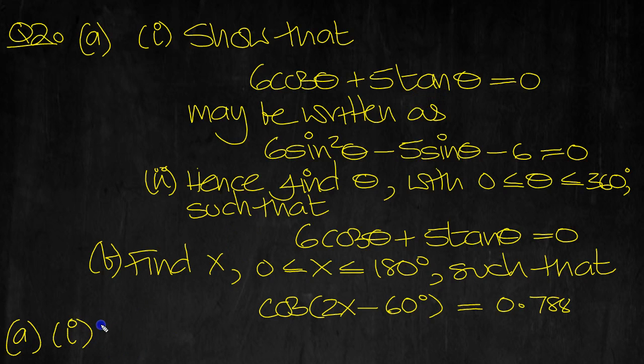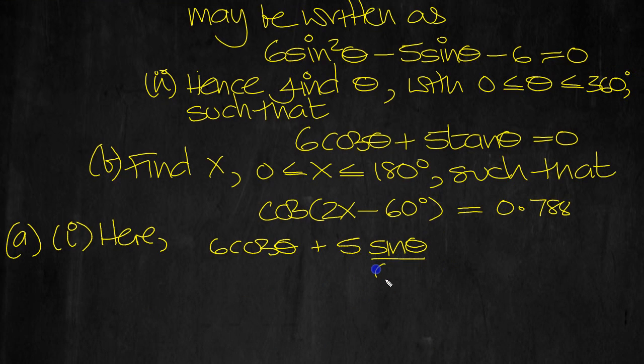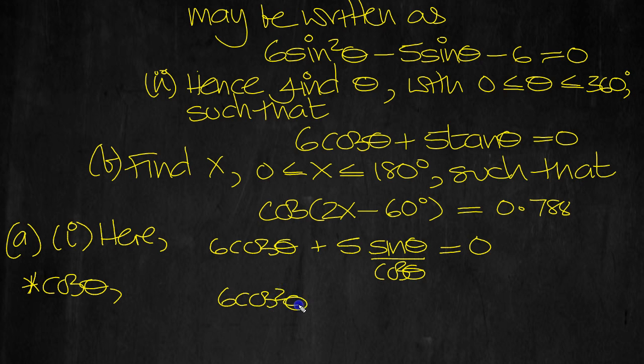So tan is sine over cos, isn't it? So let's write that down. So we've got 6 cosine theta plus 5 tan, which we can write as sine theta over cosine theta, equals 0. Multiply all the way through by the cos then to get everything on ground level. Gives 6 cosine squared plus, the cosine will cancel here on the second, and we'll just have 5 sine theta, and 0 times cos is just 0.